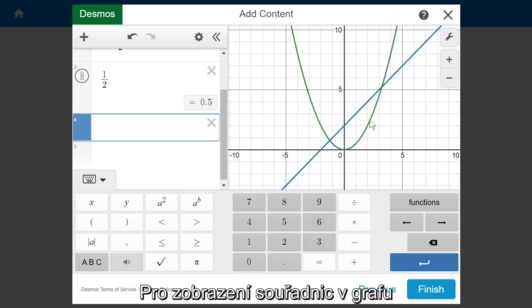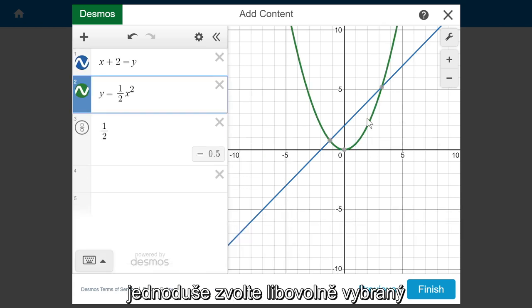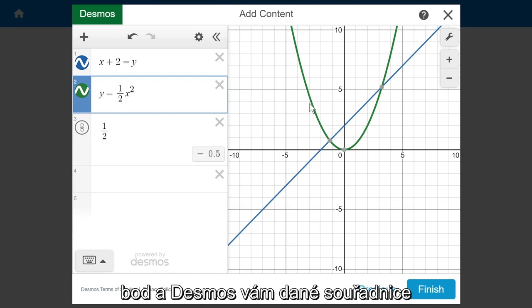To reveal coordinates on the graph, simply click or tap on any point of interest, and Desmos will reveal the coordinates.